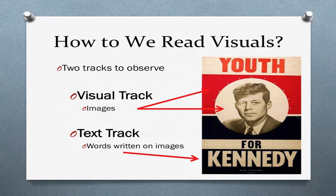The next track is what we call the text track — this is when specific words are written on images. Not the font, because that's the visual track; these are the words themselves. We need to break down a visual image into both the visual and the text track, figure out what each means individually, and then put them back together to understand what the whole text means.